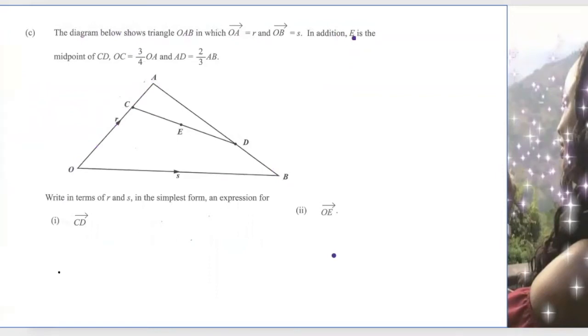In addition, E is a midpoint of CD. So E is a midpoint of this line and we also have OC is three-quarter of OA.